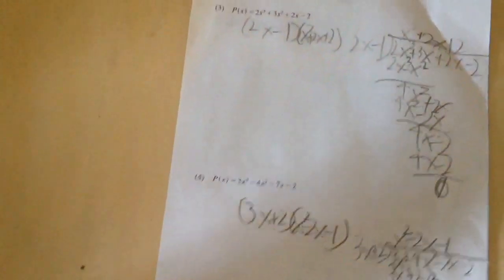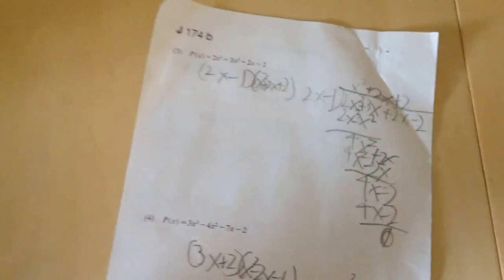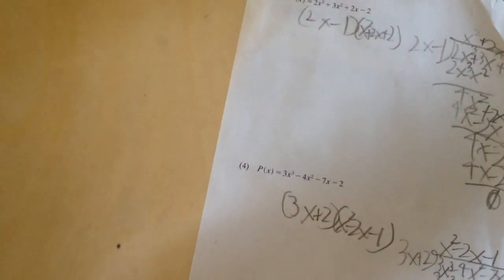Okay. How did you know that negative 2 over 3 you could plug in? Use the factor theorem, I assume, and p of negative 2 over 3 equals zero, right? Is that what you did? Yes.